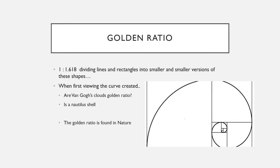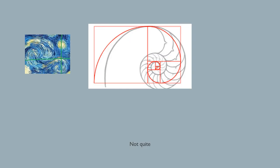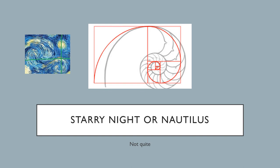I looked at the curve and thought about Van Gogh, and I thought about a nautilus shell. And I looked it up and the golden ratio is found in nature. But not quite. Nautilus shells are actually Fibonacci sequences, and starry night is close.